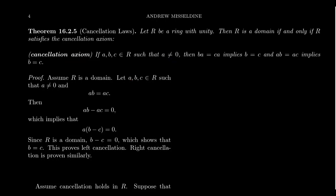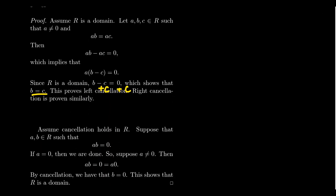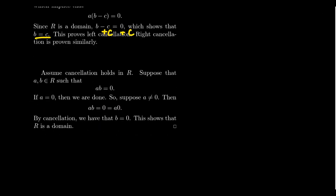Since A is non-zero, since we're in a domain, that means the other factor has to be zero. B minus C equals zero. If you add C to both sides, we end up with B equals C. We've proven the left cancellation property. Right cancellation is proven identically.